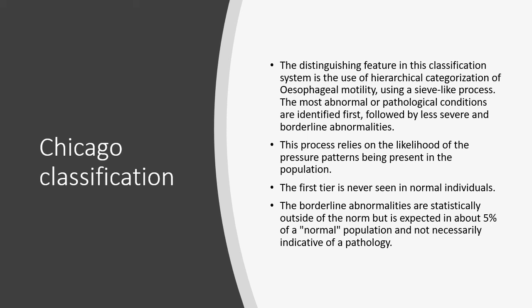This process relies on the likelihood of the pressure patterns being present in the population. The first tier is never seen in normal individuals. The borderline abnormalities are statistically outside of the norm but is expected in about 5% of a normal population and therefore not necessarily indicative of a pathology.